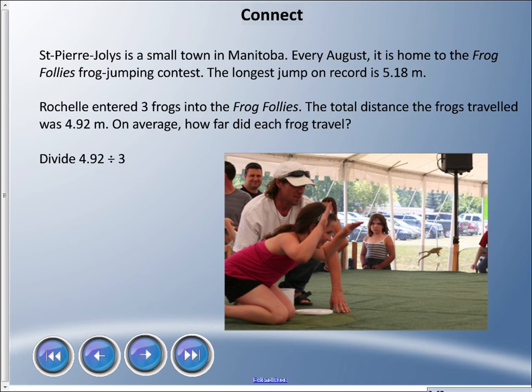All right, so St-Pierre-Jolys is a small town in Manitoba. Every August it is home to the Frog Follies frog jumping contest. The longest jump on record is 5.18 meters. That is absolutely insane how long that jump is. Let's say Rochelle entered three frogs into the Frog Follies. The total distance the frogs traveled was 4.92 meters. On average, how far did each frog travel? Remember, average means we count up all we have and divide by the number of times. We're going to take that 4.92 meters and divide it by three.